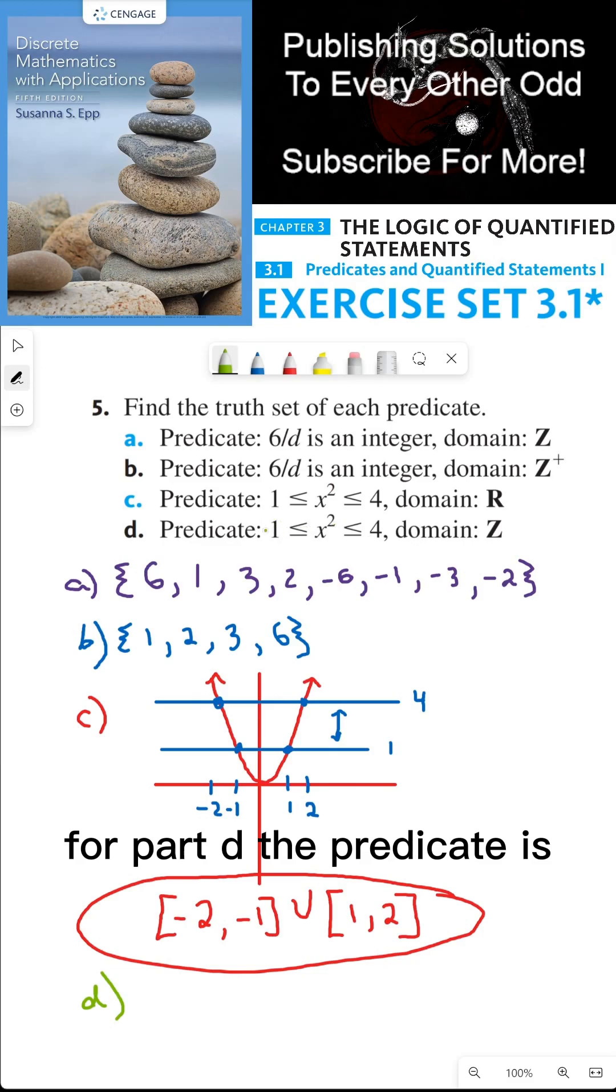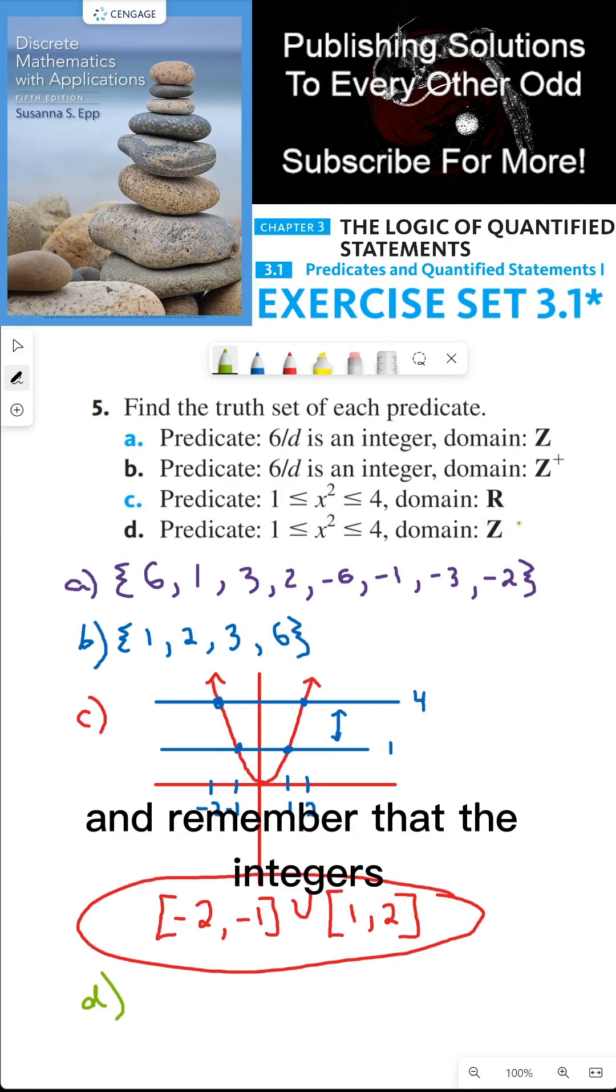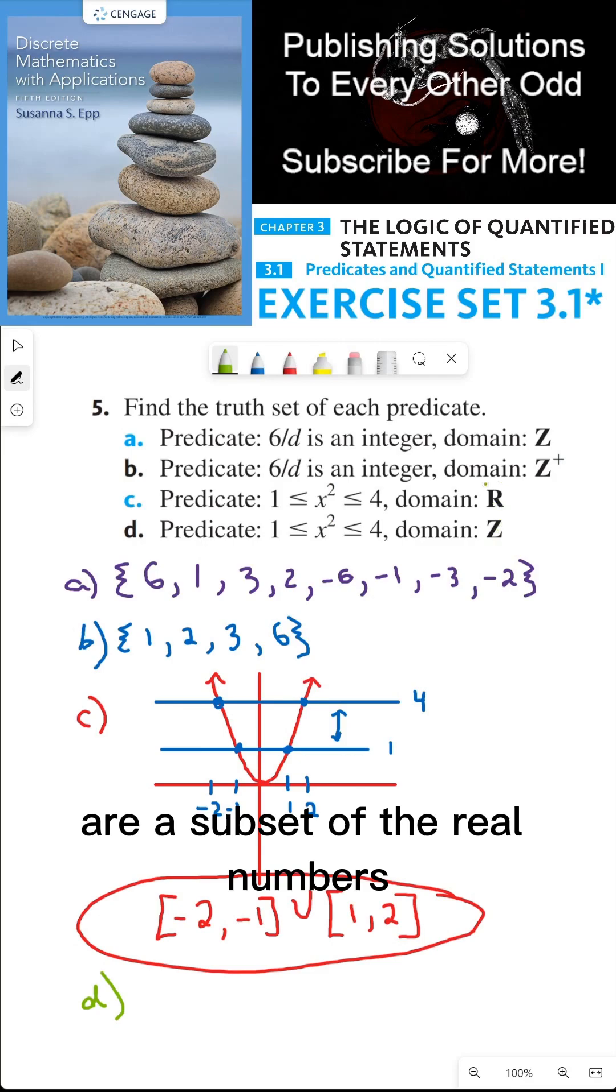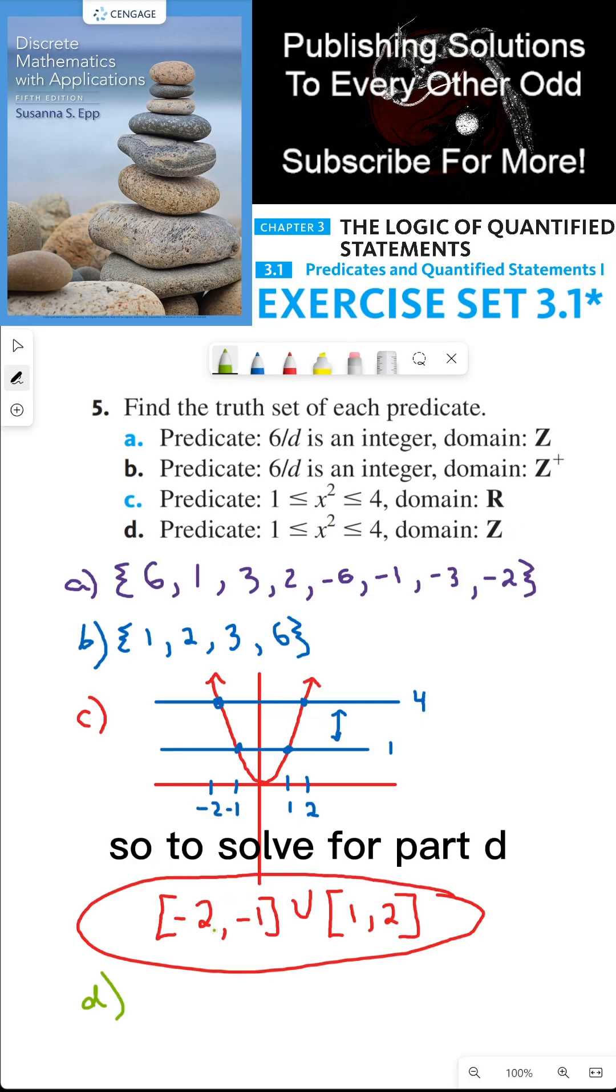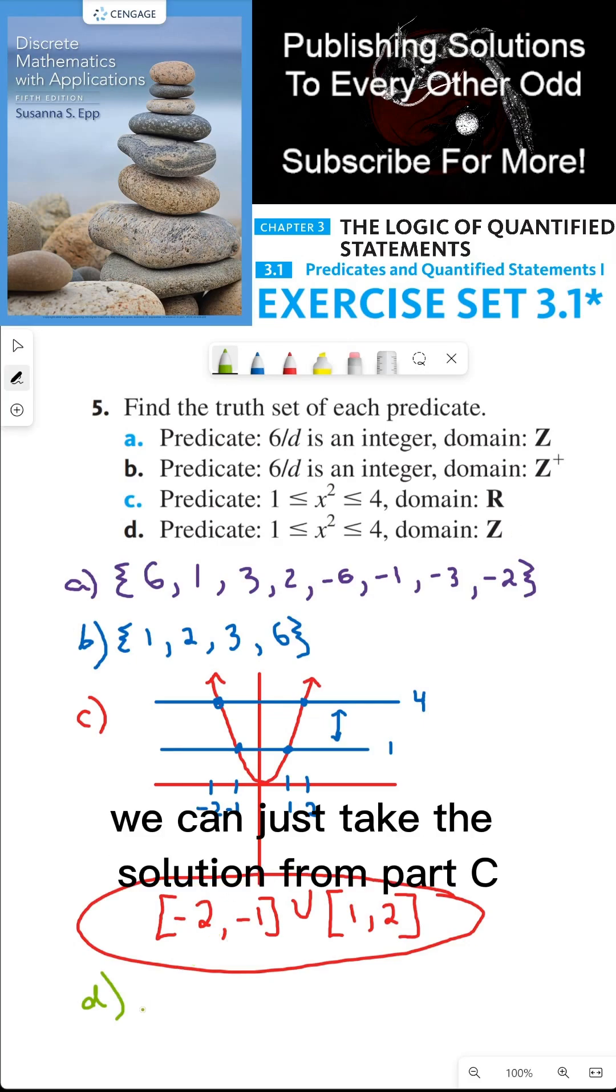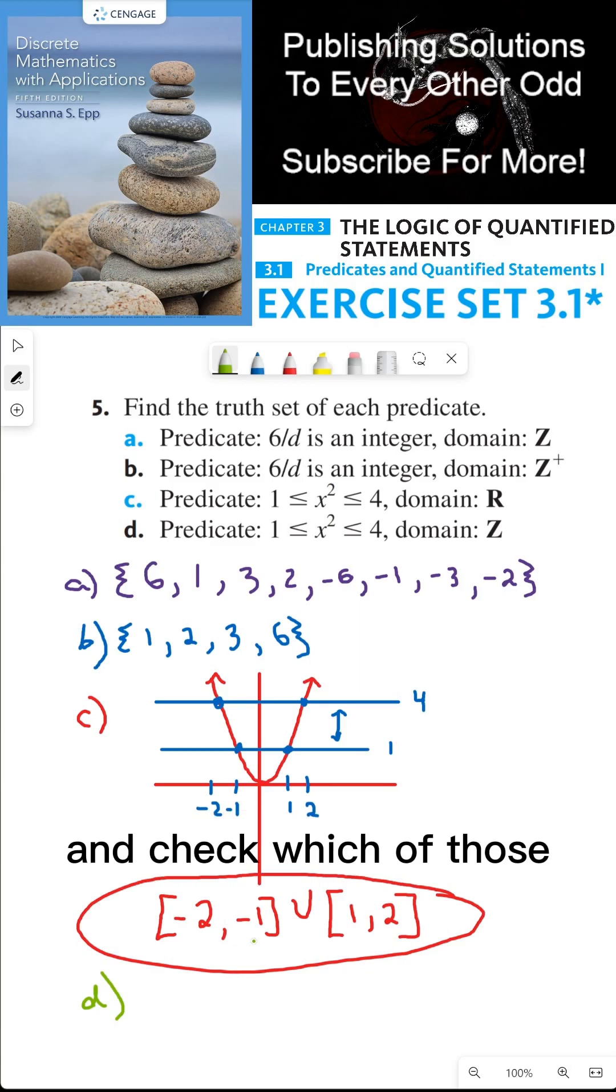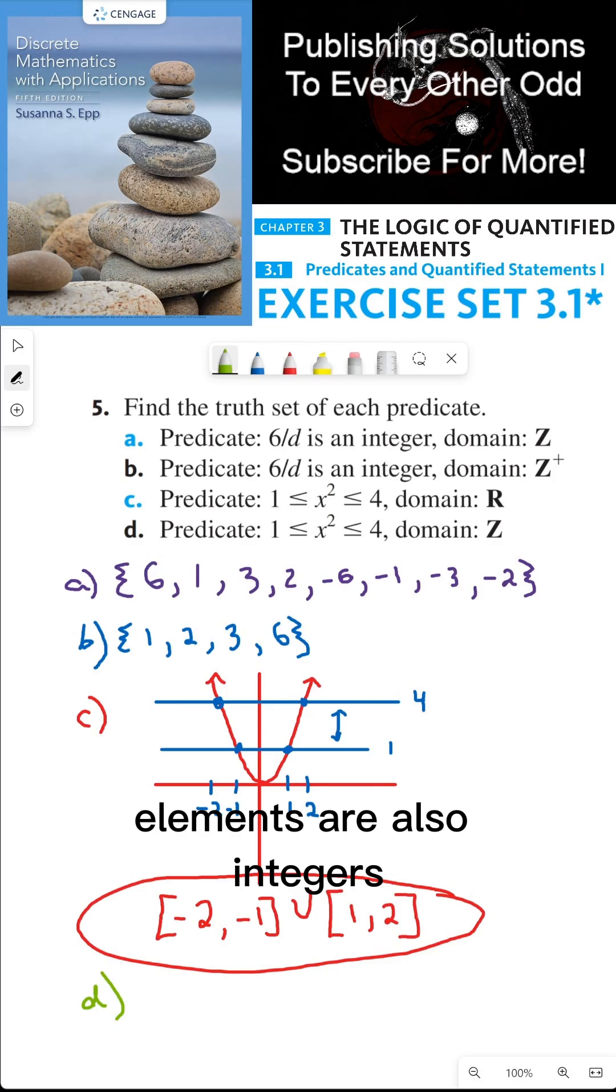For part D, the predicate is 1 is less than or equal to x squared is less than or equal to 4. But now the domain consists of the integers. And remember that the integers are a subset of the real numbers, meaning every integer is a real number, and not every real number is an integer. So to solve for part D, we can just take the solution from part C and check which of those elements are also integers.